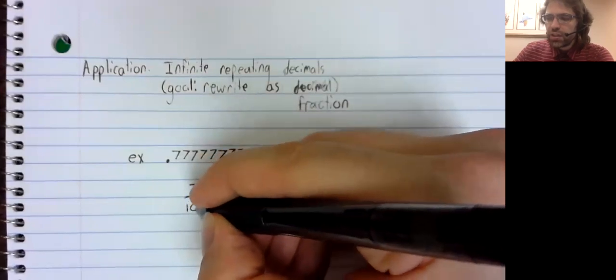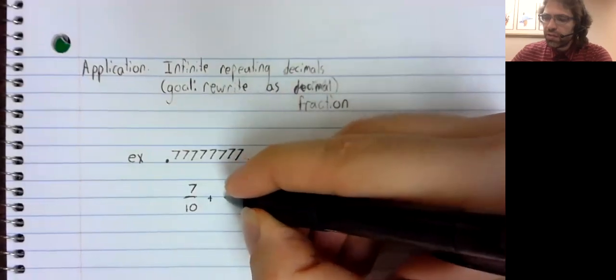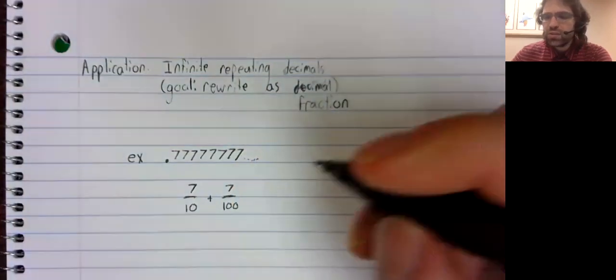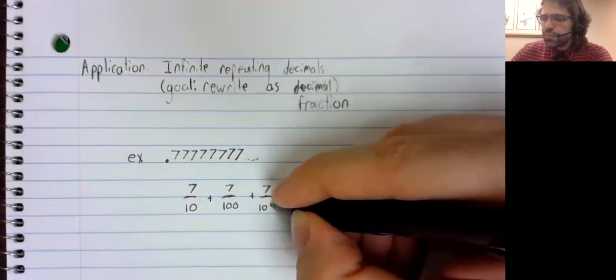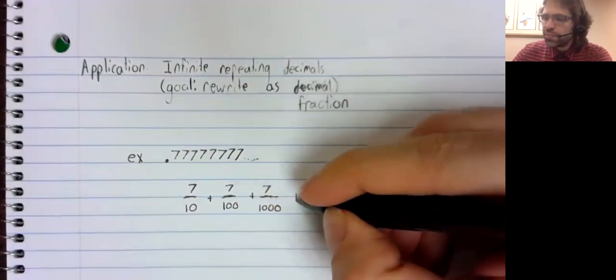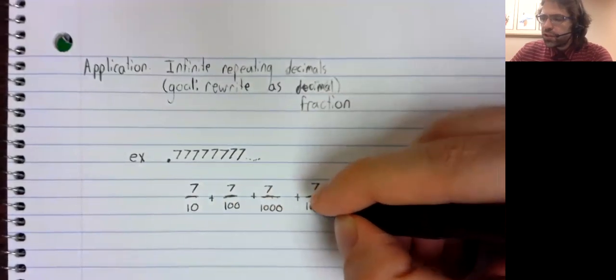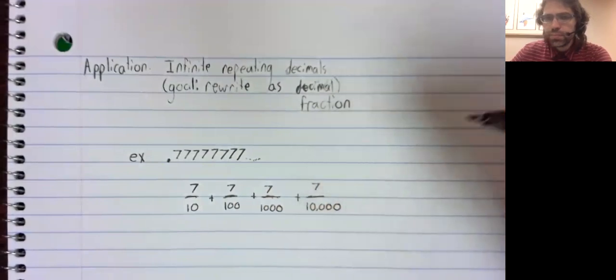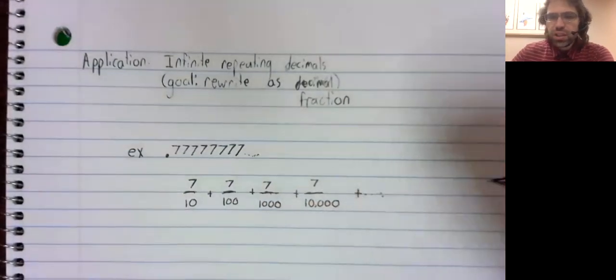There's a seven in the tenths place, a seven in the hundredths place, a seven in the thousandths place, and so on. And this is a geometric series.